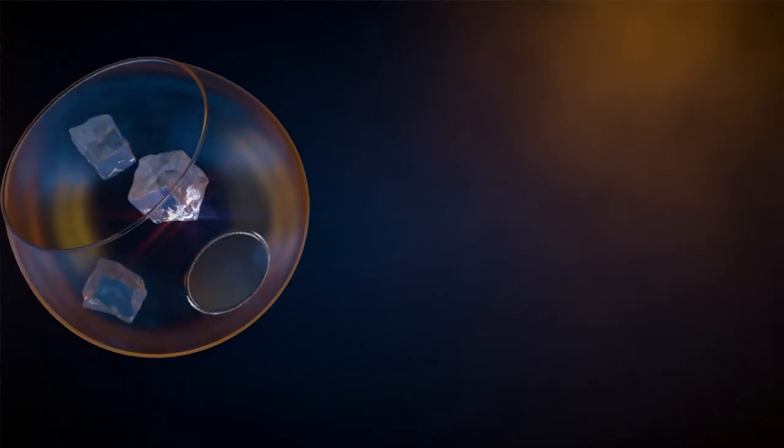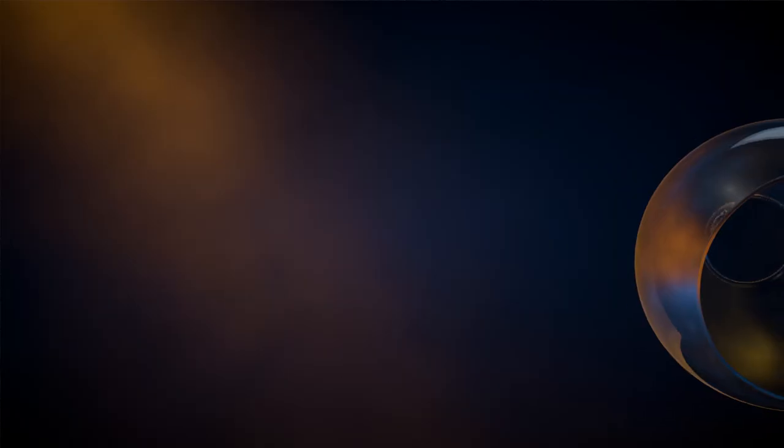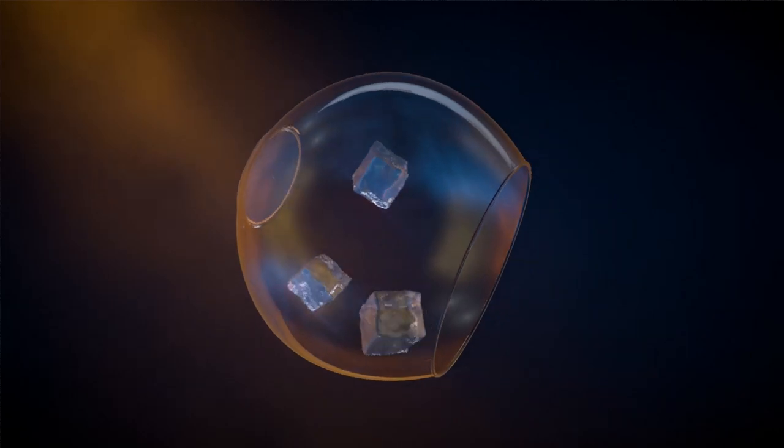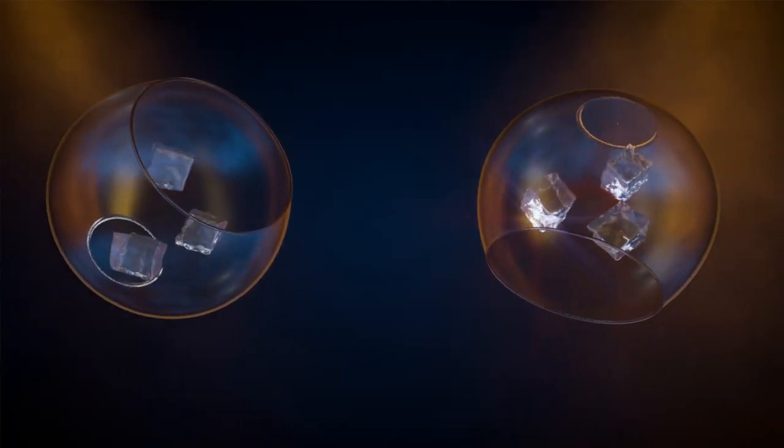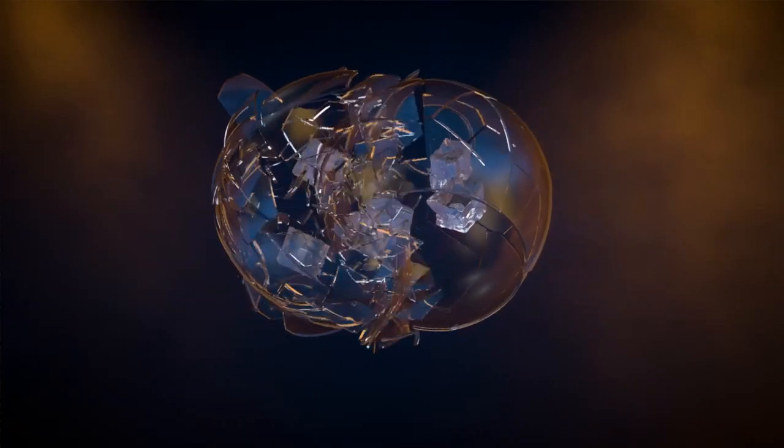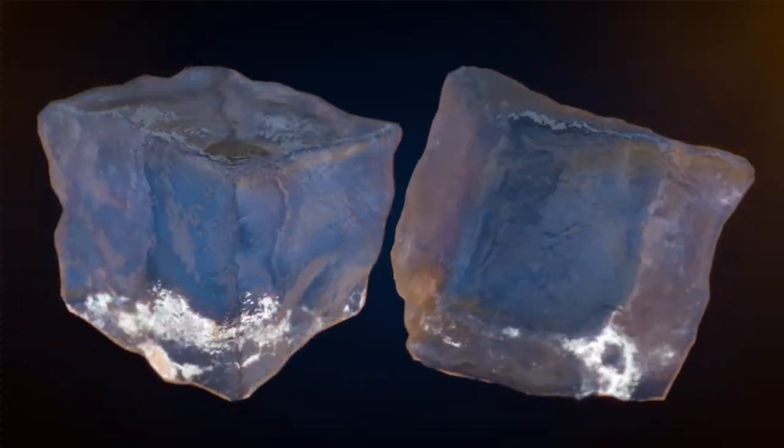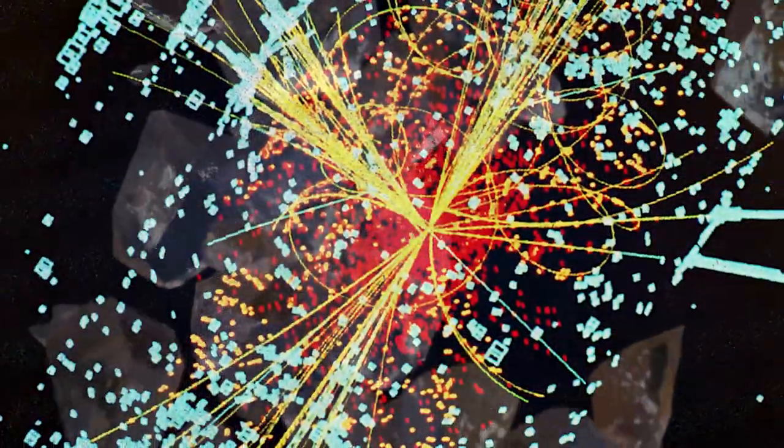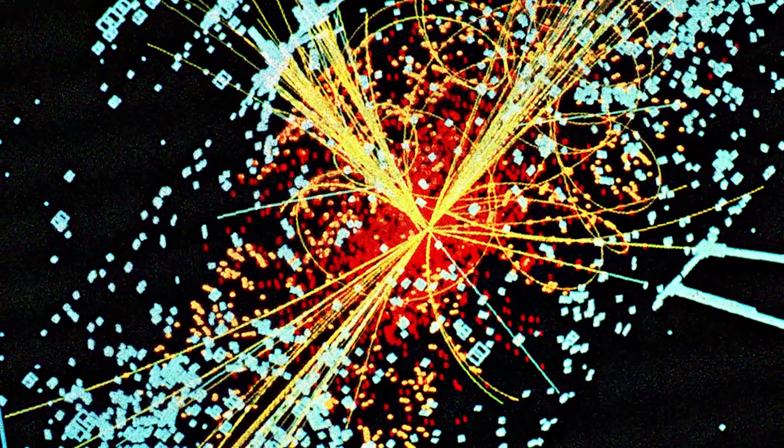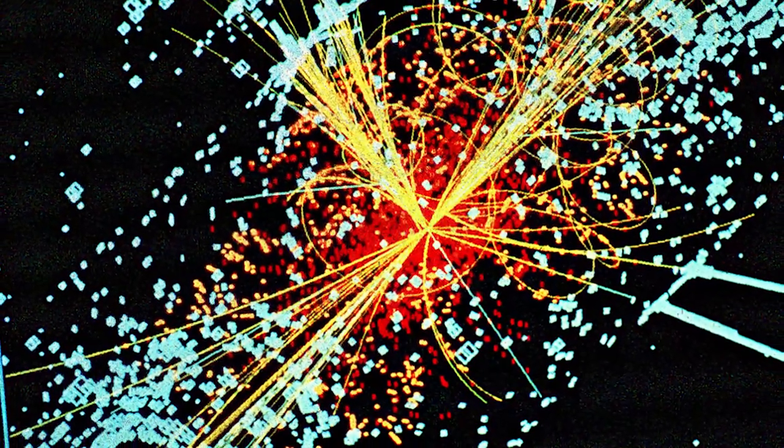Imaginez que les protons sont des bocaux à poissons et les quarks des glaçons qui se font brasser à l'intérieur. Ils volent l'un vers l'autre à grande vitesse. La plupart du temps, les bocaux se heurtaient violemment. Mais de temps à autre, deux des glaçons entraient aussi en collision. Dans le LHC, ce sont les collisions plus rares entre les quarks et les gluons qui maintiennent les quarks ensemble et produisent l'énergie intense requise pour créer un boson de Higgs.